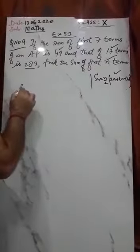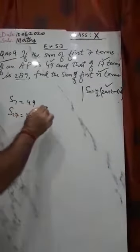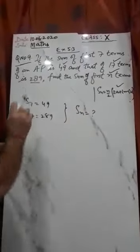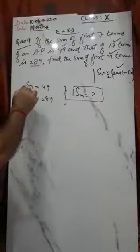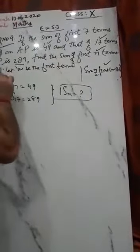So you have to find the sum of first n terms. Given: sum of first seven terms is 49, sum of first 17 terms is 289. We have to find the sum of first n terms. Let's start the solution. Let a be the first term and d be the common difference — this is what you need to write at the start of your solution.